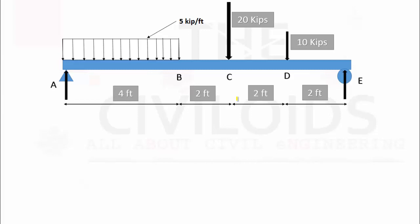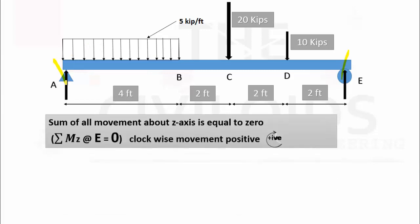Remember this point: if you want to find reaction A first, you have to take the sum of all moments about E equal to zero, and if you want to find reaction E first, you have to take the sum of all moments about A equal to zero. I want to find support reaction at A first, so I have taken the sum of all moments about E equal to zero. I have taken clockwise moment as positive and anti-clockwise moment as negative.